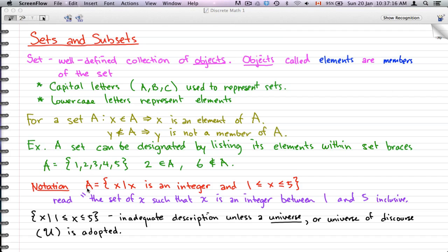I'm going to talk to you guys about this kind of notation that we see here. So, A equals {x | x is an integer and 1 ≤ x ≤ 5}. This is written as a set of x such that x is an integer between 1 and 5, inclusively. This is always needed. X as an integer is always needed. You need the universe.